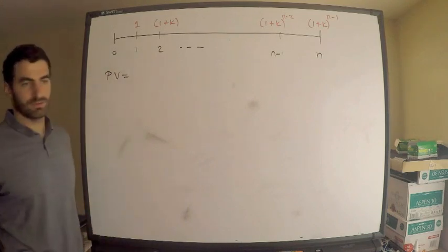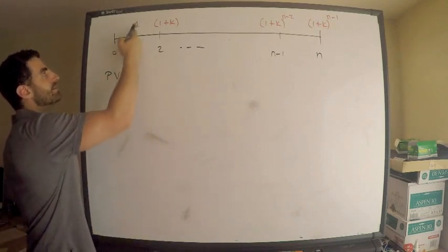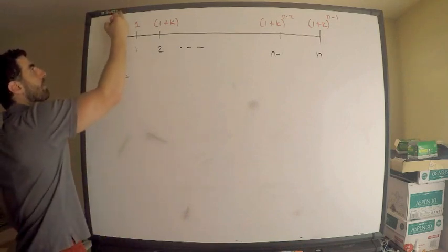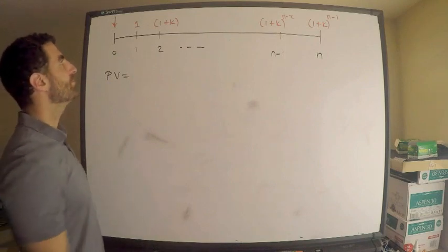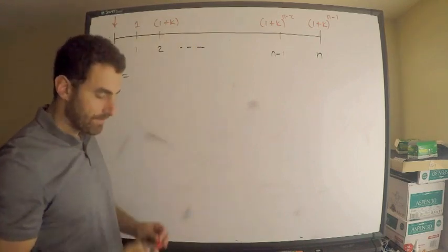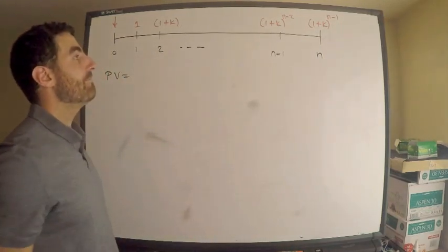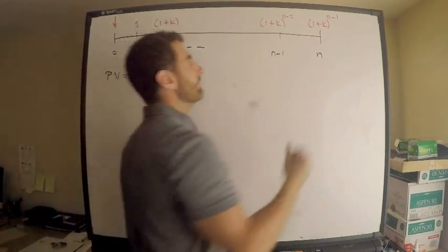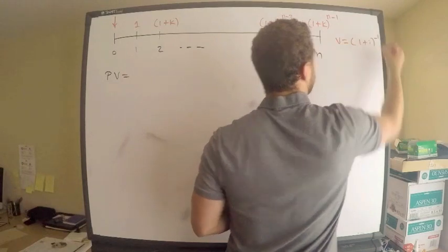Here's the deal: I want the present value of these cash flows. The most basic approach by definition is to discount all of them back to time zero. I should be more specific — I want the present value assuming we're at time zero, so we discount everything back to time zero using the discount factor v, where v equals (1 + i) to the negative 1, and i is the effective interest rate.